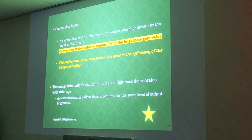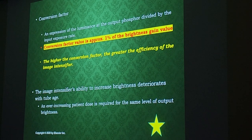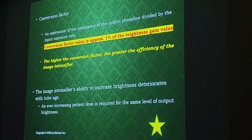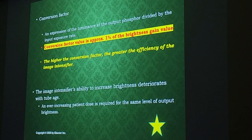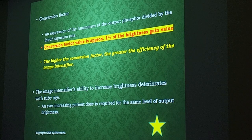We're going to continue on starting with the conversion factor and brightness gain — how are they related? The conversion factor is basically an expression of the luminance we get at the output phosphor divided by the exposure at the input phosphor. So it's calculating the gain and intensity we get at the output phosphor.